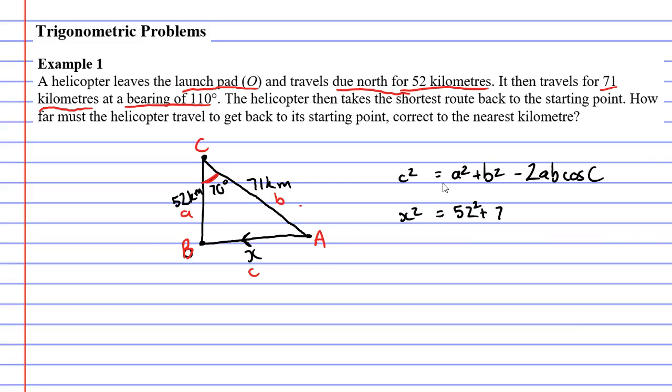Now let's substitute. Lowercase c is x. Lowercase a is 52 kilometers, squared. Lowercase b is 71 kilometers - we square that one - minus the 2 times a (a being 52) times b (which is 71 kilometers) times cos of capital C (capital C being our angle of 70 degrees).